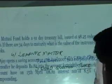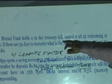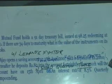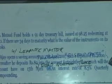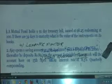This is one module question. It is not a module question, it's a two mark question I am talking about. Please read question one: a mutual fund holds a ninety one day treasury bill issued at ninety eight point two five redeeming at hundred and there are thirty four days to maturity. What is the value of the instruments on its books?